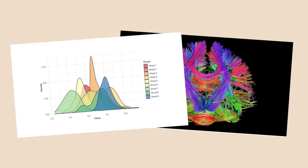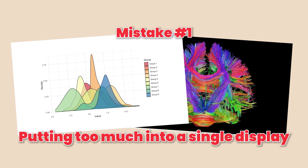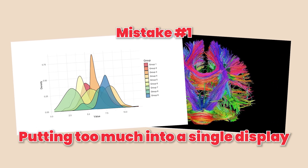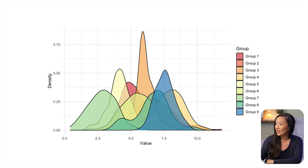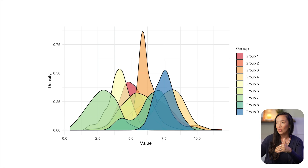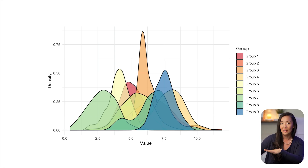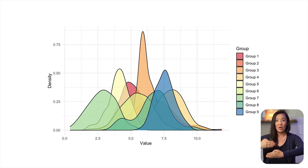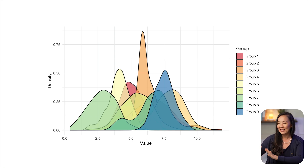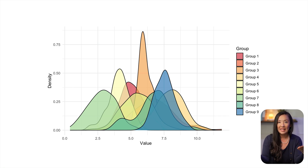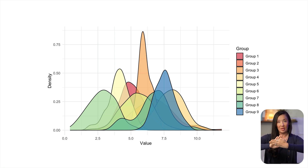The first thing that beginning visualization designers do wrong is to put too much into a single display. Here we have a visualization showing nine different groups in one frame, plotting a density plot that shows the overall proportion of different values within each group. Each group is layered one in front of and behind another. This is too complex — there's too much going on. There is what we call over-plotting.